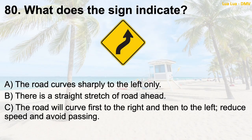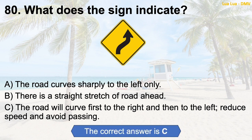Question 80: What does the sign indicate? A. The road curves sharply to the left only. B. There is a straight stretch of road ahead. C. The road will curve first to the right and then to the left — reduce speed and avoid passing. The correct answer is C: The road will curve first to the right and then to the left — reduce speed and avoid passing.